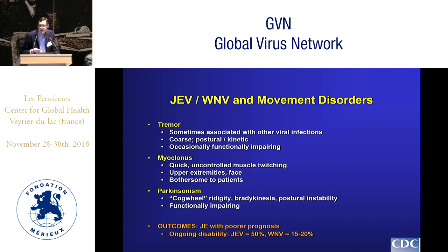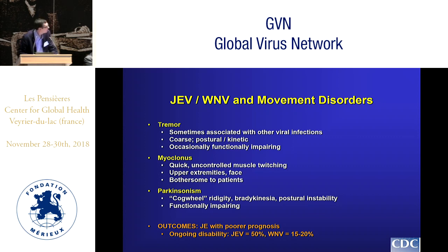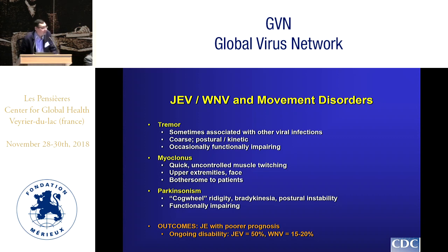There is an association between these flaviviruses and movement disorders. Tremor seems very prominent in West Nile and Japanese encephalitis — it tends to be a coarse tremor, postural when holding a position, or kinetic when moving. Myoclonus is characterized by quick, uncontrolled muscle jerking or twitching; in JE and West Nile it tends to occur in the upper extremities and facial muscles — a relatively benign condition but very bothersome to patients. Parkinsonism is characterized by cogwheel rigidity, bradykinesia or slowness of movement, and postural instability — essentially the signs and symptoms of Parkinson's disease — and is one of the most functionally impairing manifestations.